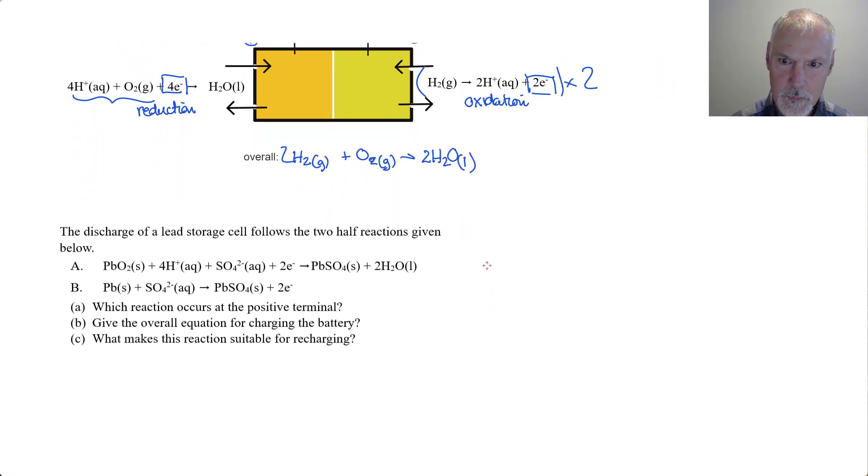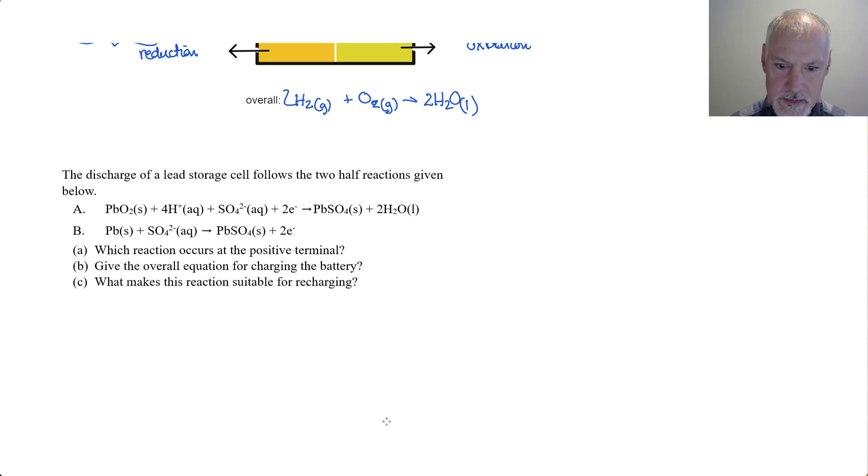Let's now apply what we've just looked at to a question here. This is from a lead storage cell that's found in a car battery. First of all, which reaction occurs at the positive terminal? The positive terminal is the cathode in a voltaic cell. Again, I can remember that, because that T looks a lot like a positive sign. And the cathode is where reduction occurs. And reduction is the gaining of electrons. So this equation shows these species gaining electrons. So that's the one that occurs at the positive terminal.